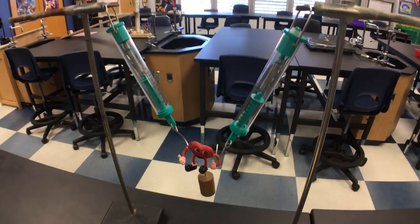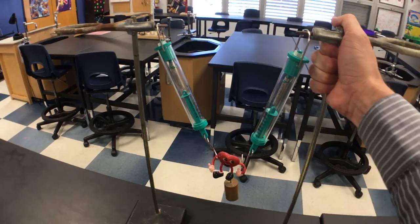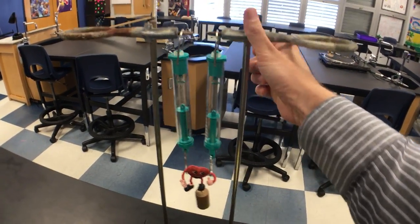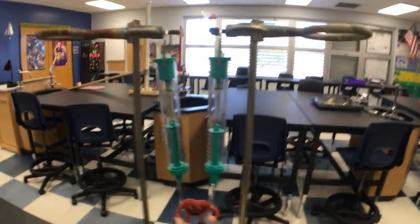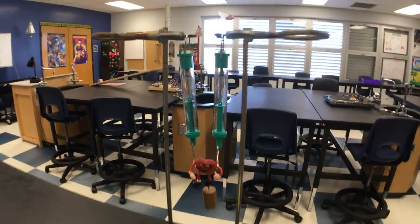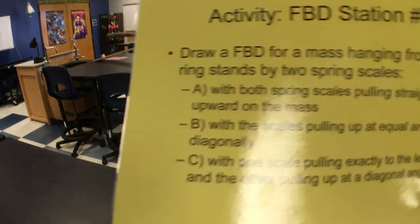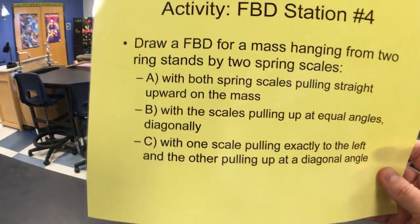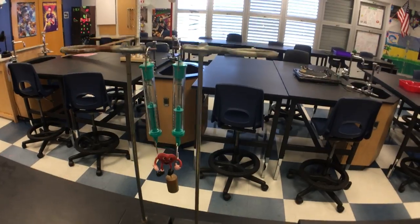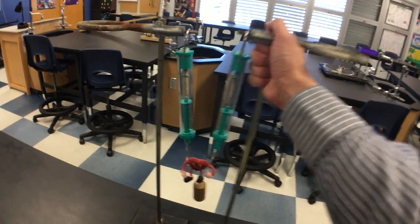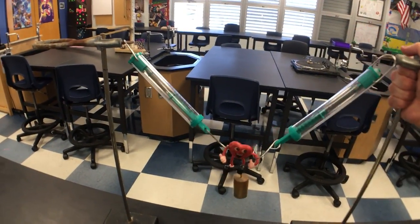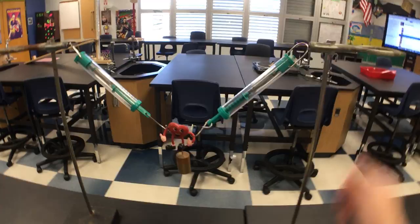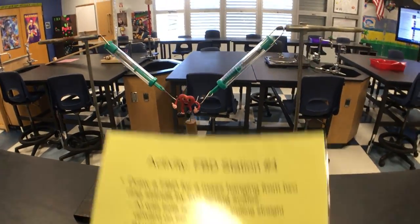That's going to look like this — we're going to have to modify this just a little bit to see it. Now they're both pulling straight up on that mass. What about B? B says: with the scales pulling up at equal angles diagonally. That's what we had to start with. And those are equal angles diagonally.